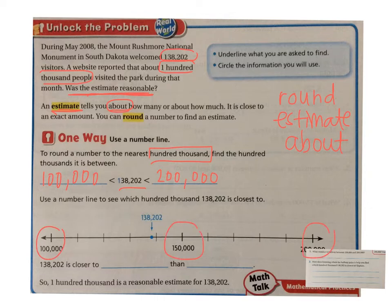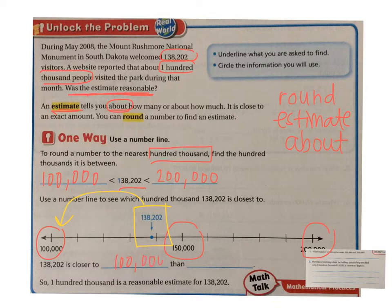100,000 is right here and 200,000 is all the way over here. We know right in the middle of that is 150,000. Since 138,202 is over here, it is closer to 100,000 than it is to 200,000. So 100,000 is a reasonable estimate for 138,202. Pause the video here to take some math notes and to jot down your thinking at this point.